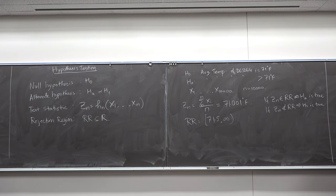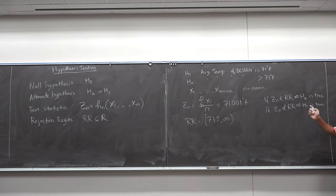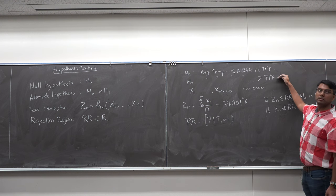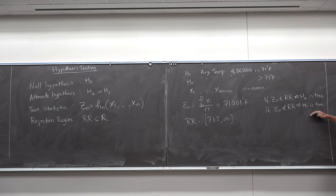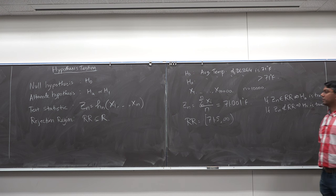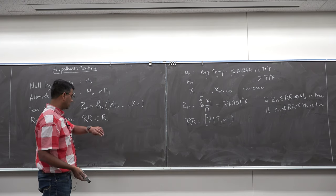Different people picking different rejection regions will reach different conclusions about H0 and HA, even though the underlying reality is fixed. This brings us to two types of error. Type 1 error: H0 is rejected but H0 is true. Type 2 error: H0 is accepted but HA is true. The reality is immaterial of our observations or test statistic — what changes is whether we incur a type 1 or type 2 error.